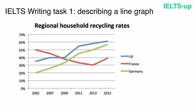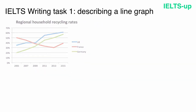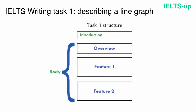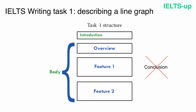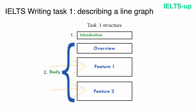Now let's see how you should structure your answer. Here is the standard structure for a band 9 answer — it consists of an introduction and body paragraphs. You should never write a conclusion when describing a graph. The first paragraph is your introduction. After that, you start writing your body paragraphs, which should include a general overview first and then the specific detail.